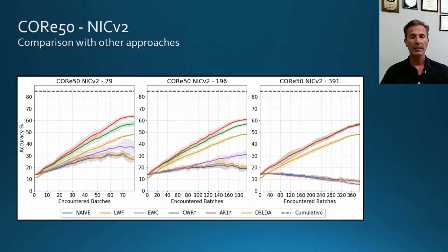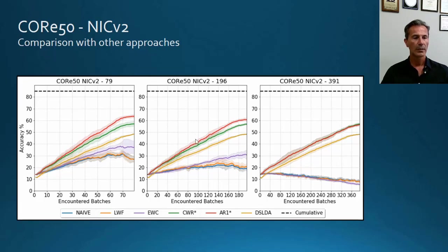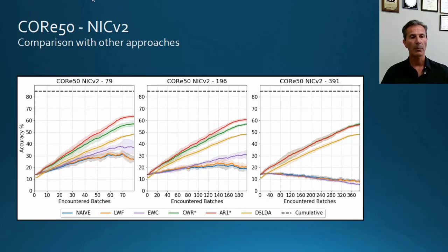Here I am comparing the accuracy of AR-1 with other well-known techniques on the Core50 NIC setting, including Learning Without Forgetting, Elastic Weight Consolidation, and DS-LDA. The accuracy of AR-1 is quite good in the three cases — 79, 196, and 391 batches — even if the gap with respect to the cumulative upper bound is quite relevant, about 20 accuracy points. The cumulative upper bound refers to offline training on the entire dataset, representing an accuracy upper bound.